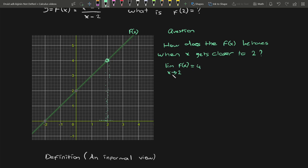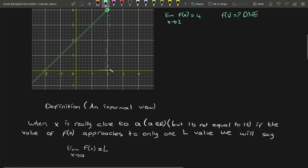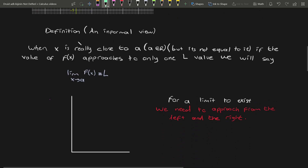So what does this mean? This means that when I approach 2 for the function, the values are getting so close to 4 that I'm going to say this limit is equal to 4. Basically, what we're doing is, instead of putting the value of the function — which does not exist in this situation — we try to approach it from left and right. When our x is really close to a, and if the value of f(x) approaches to only one value L, we will say the limit of f(x) as x approaches a is equal to L.